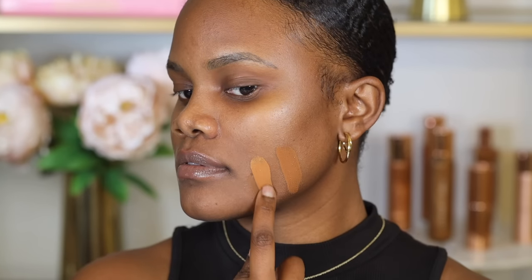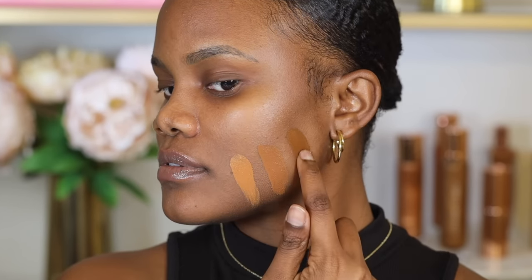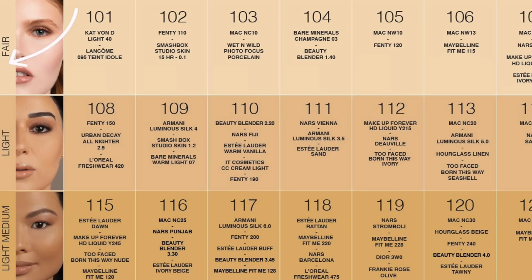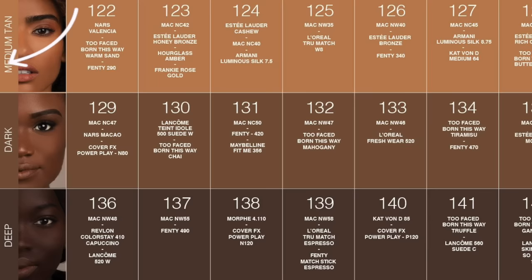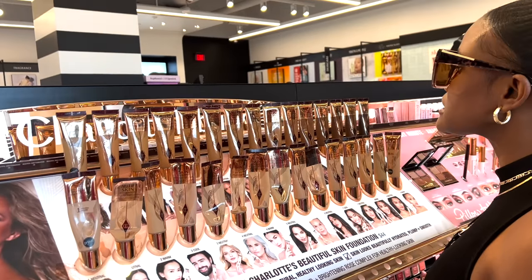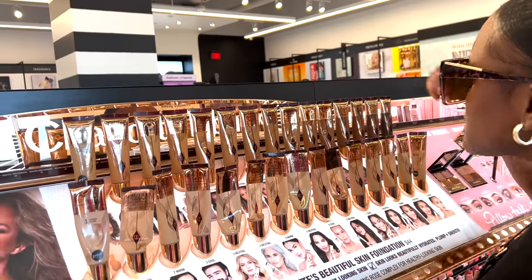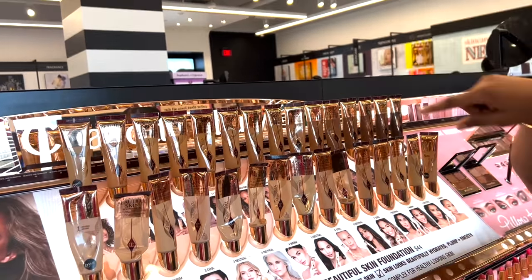What's the easiest way to find your exact foundation shade? In this video, I'll be showing you the secret to finding the exact match. The first thing is to find the right category for your skin tone. There are usually six main categories: fair, light, medium, tan, deep, and dark. When you're in store or online, you want to only focus on that category.